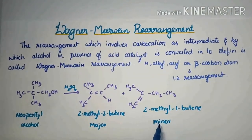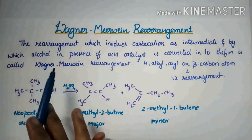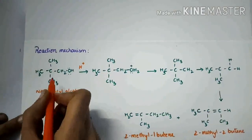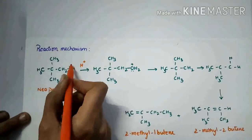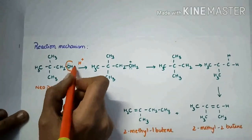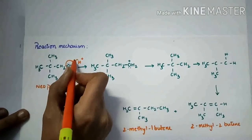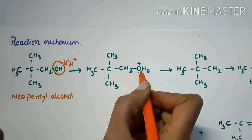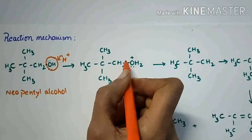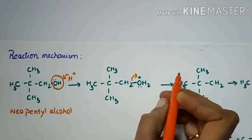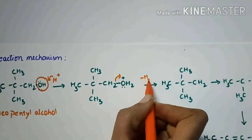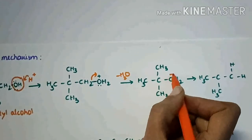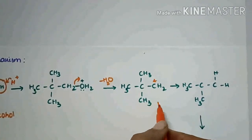Let us see the reaction mechanism of Wagner-Meerwein rearrangement. In neopentyl alcohol, one OH is there. It is protonated by the acid catalyst and then it forms H2O⁺, which is unstable, so it is removed as a water molecule, forming a carbocation. It is a primary carbocation.